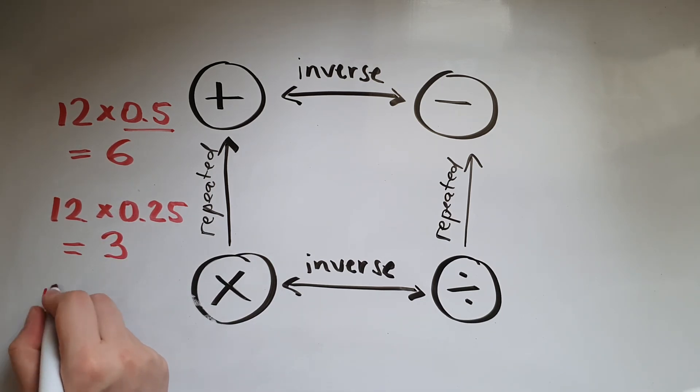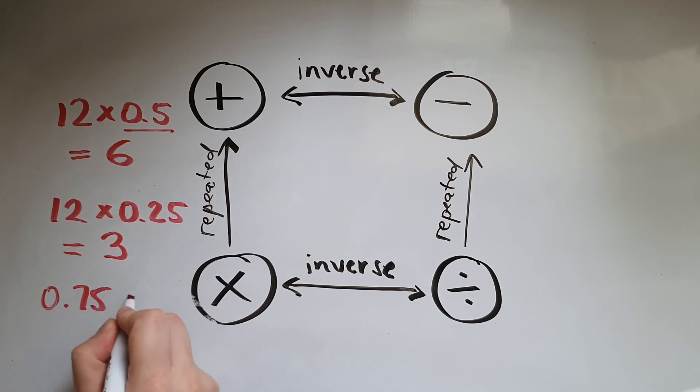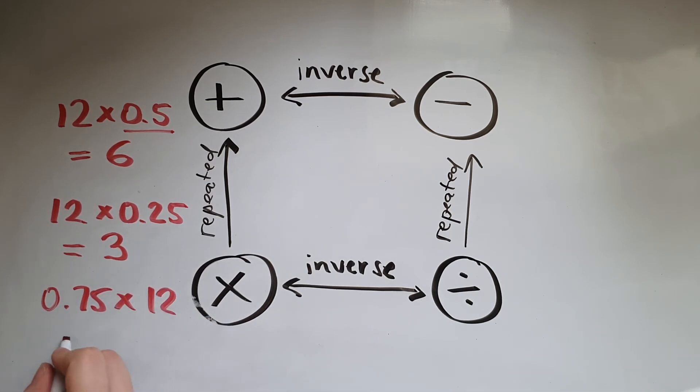Or 0.75 times 12. The answer is going to be 9 because we are actually working out 3 quarters of 12 by multiplying it by 0.75.